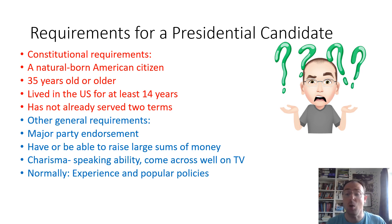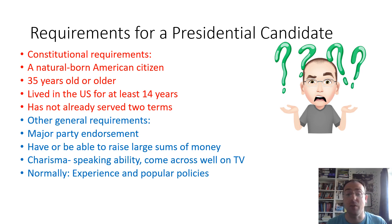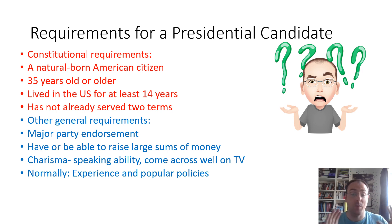You have to be 35 years old or older. You need to have lived in the US for the last 14 years — so if you're a natural born citizen but you've moved away and haven't been living in the States, you can't then immediately come back and run. And you can only stand if you've not already served two terms, which goes back to an amendment brought into the Constitution following the time in office of FDR. Those items in red on screen are the actual constitutional requirements.